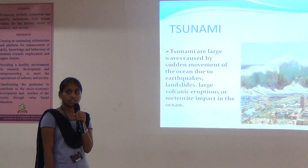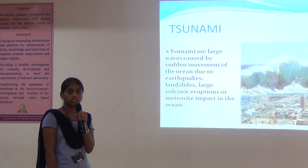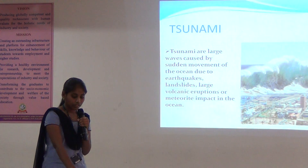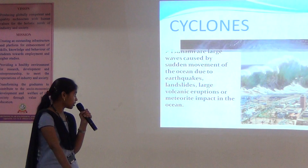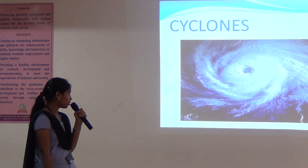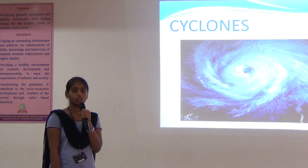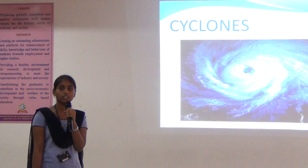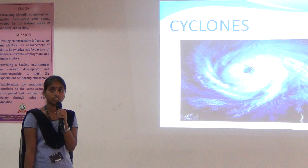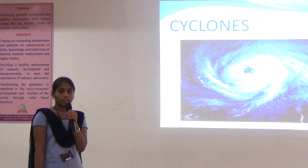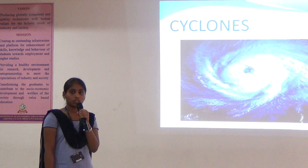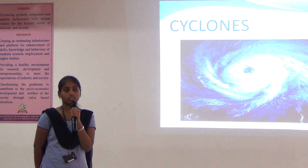The preventions of the tsunami are two: we can go to the high-level areas and to the long sea. Cyclones occur in the low atmospheric pressure areas in the middle of the oceans, and cyclones can cause most of the loss.